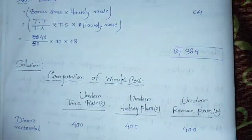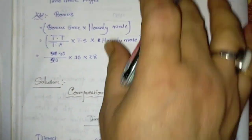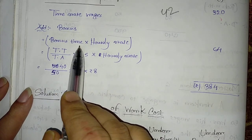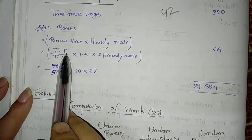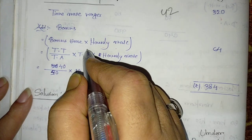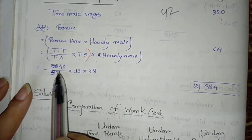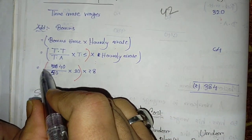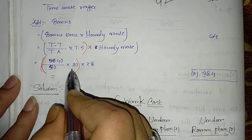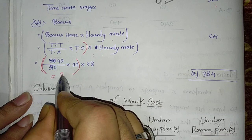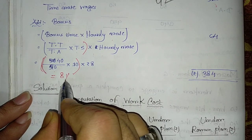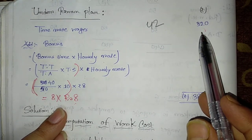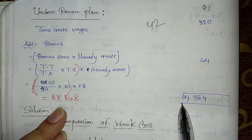Under the Rowan plan: time rate wages = Rs. 320. Bonus time = (time taken ÷ time allowed) × time saved = (40 ÷ 50) × 10 = 8 hours. Bonus = 8 × Rs. 8 = Rs. 64. Total wages under Rowan plan = Rs. 320 + Rs. 64 = Rs. 384.